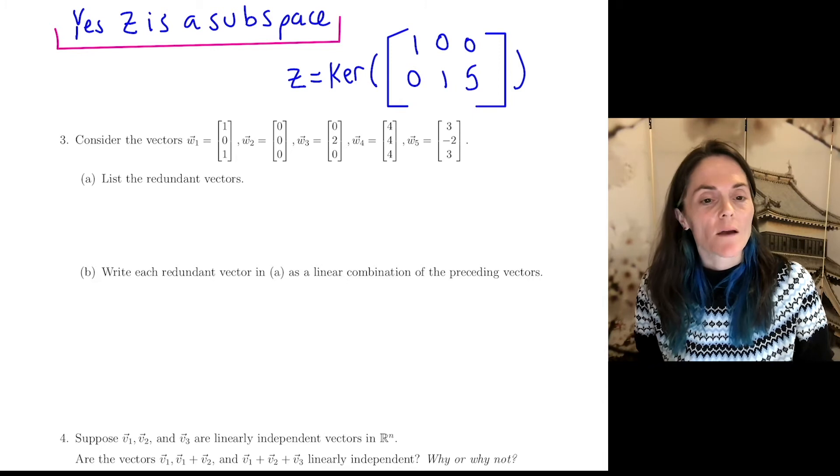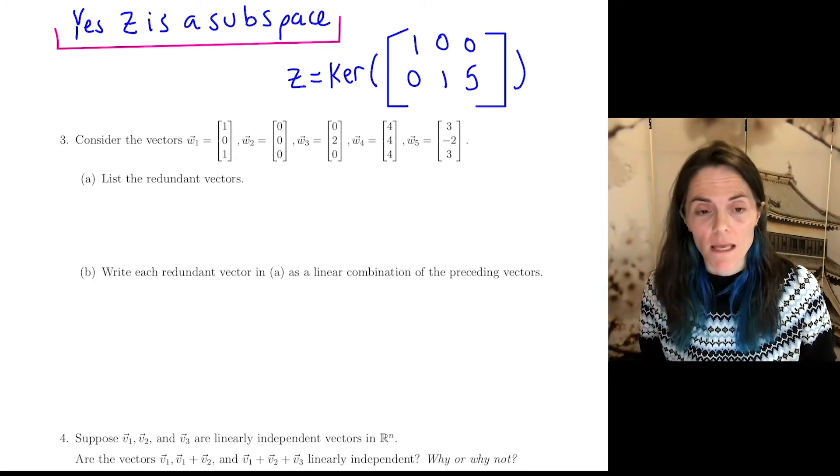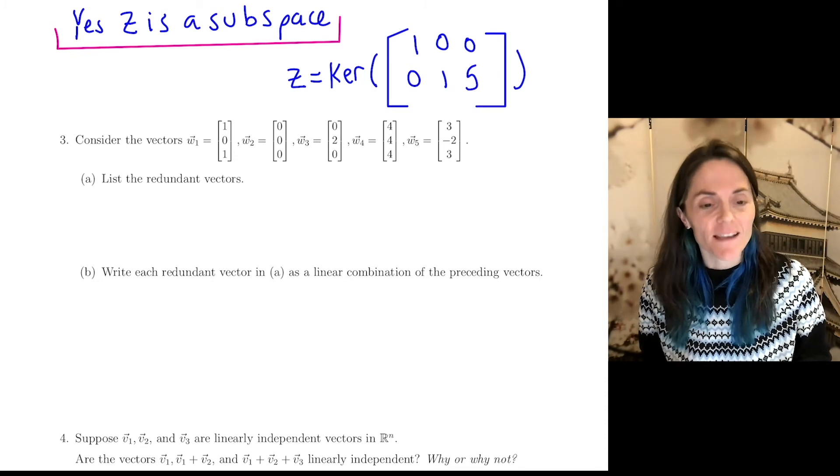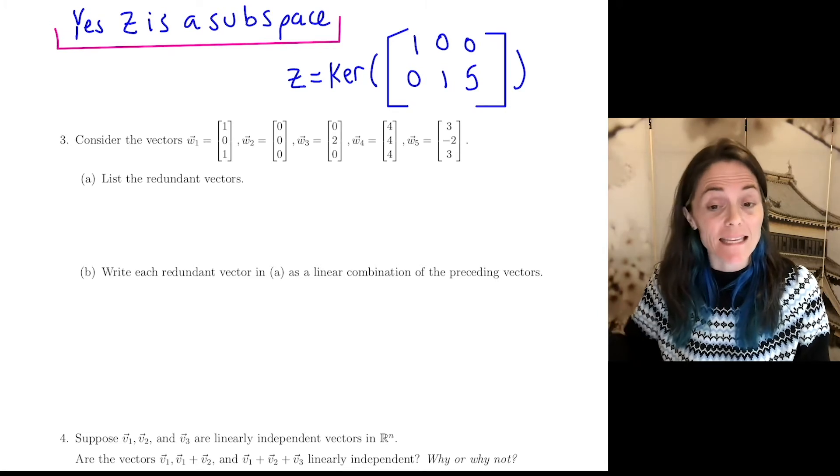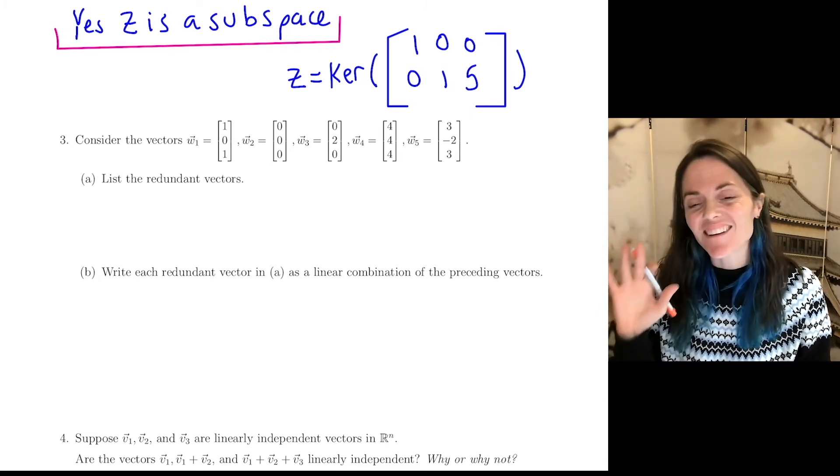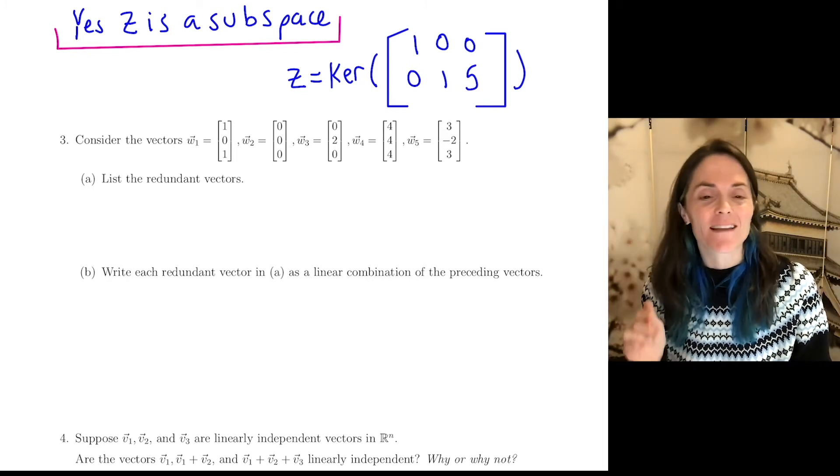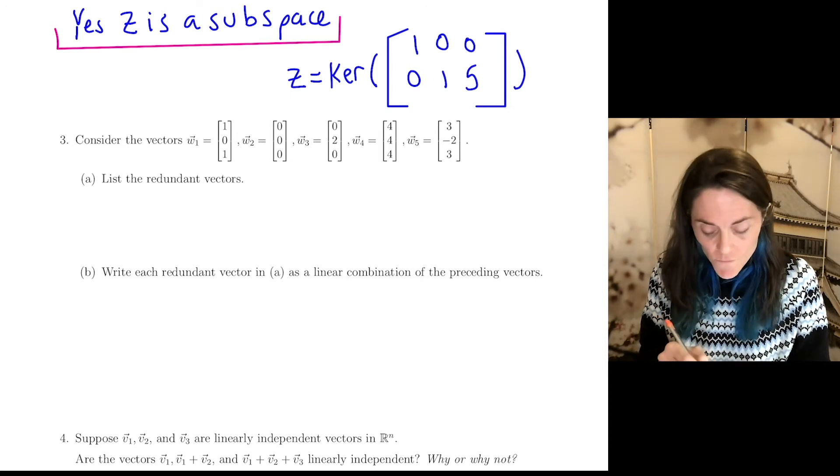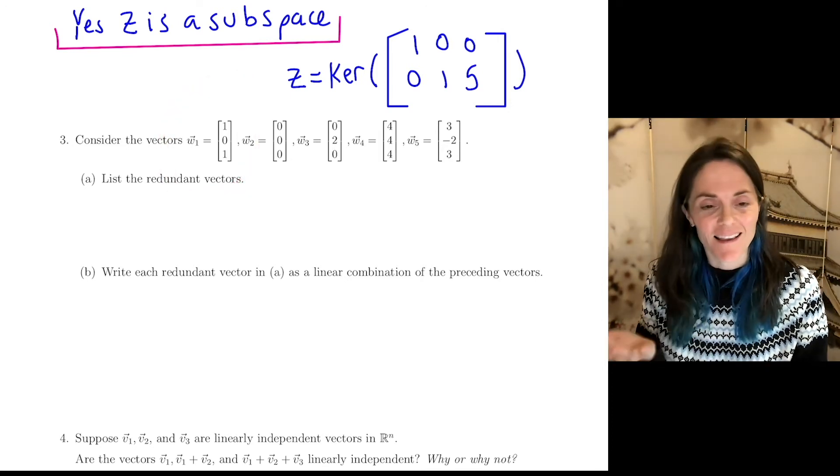Number three. We are given five vectors, and these five vectors are in R³, and we want to list the redundant vectors. And then for each redundant vector, we want to write it as a linear combination of the vectors that came before. This first vector, W1, that's not redundant. It's non-zero, and it's the first vector.